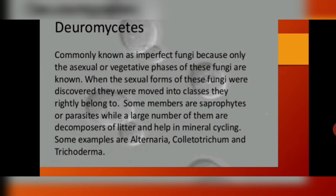Last are the deuteromycetes, commonly known as the imperfect fungi, because only the asexual or vegetative phases are known. They don't show sexual phases; when they do show sexual reproduction, they are reclassified into basidiomycetes or ascomycetes. Some members are saprophytic and some are parasitic. Some help in decomposition of litter and mineral recycling. Examples include Alternaria, Colletotrichum, and Trichoderma.